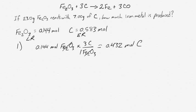So now we know which one's limiting, we can work out what our theoretical yield is. We can work out how much iron actually gets produced.